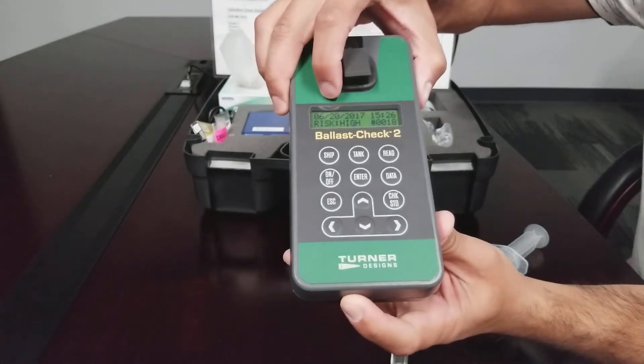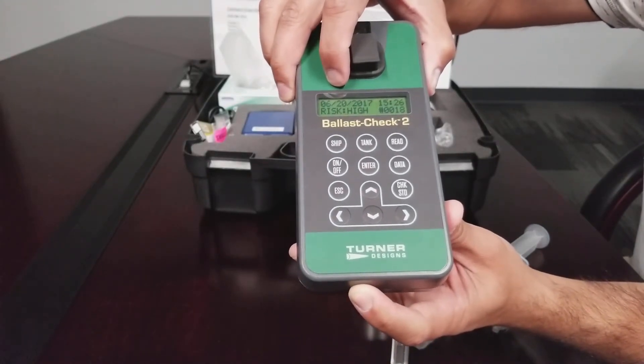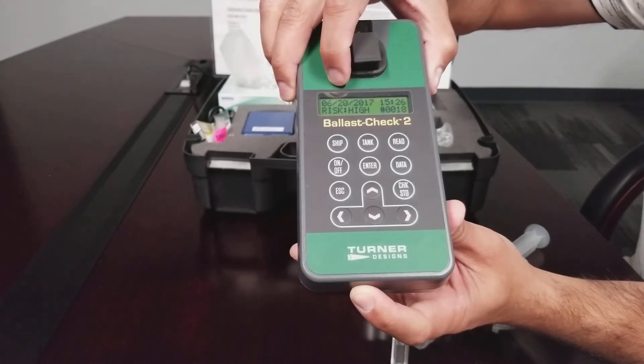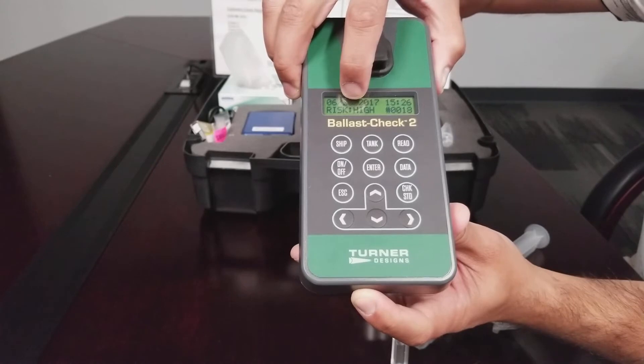Results will be displayed on the screen and logged to memory to be downloaded at a later time. Risk, an indication of exceeding the discharge standards, is displayed on the screen as low or high. In this case, the risk is high.